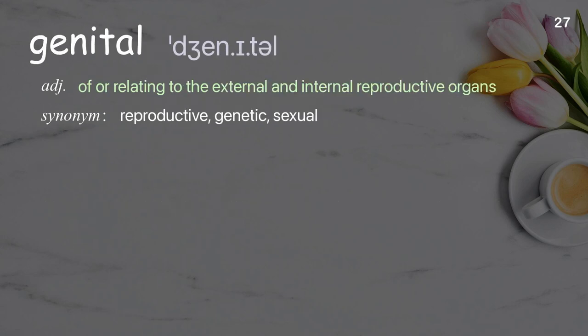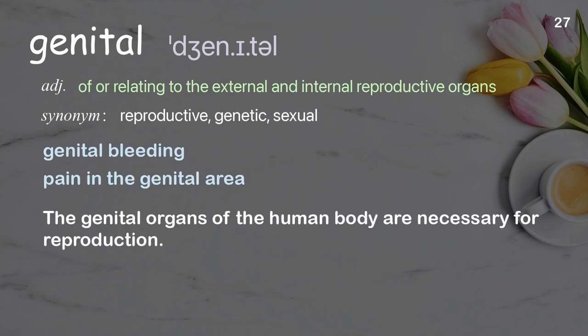Genital: of or relating to the external and internal reproductive organs. Examples: genital bleeding, pain in the genital area. The genital organs of the human body are necessary for reproduction.